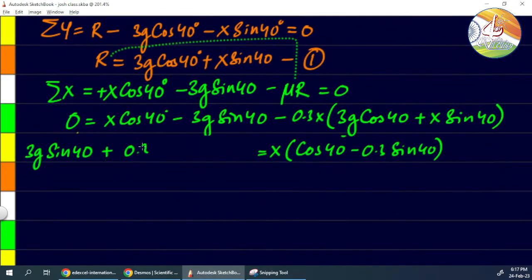Then 0.3 times 3g cos 40, this will also become positive this side. So X will be this total divided by this total.